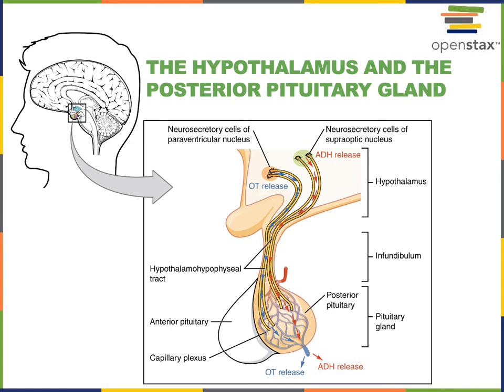The hypothalamus regulates the activity of the pituitary gland by producing hormones that are either secreted from the posterior pituitary gland or regulating the production of hormones released from the anterior pituitary gland. The hypothalamus and pituitary gland are connected through a stalk called the infundibulum, which contains the axons of neurosecretory cells located in the paraventricular nucleus and supraoptic nucleus of the hypothalamus. These neurosecretory cells are neurons that release hormones called neurohormones.